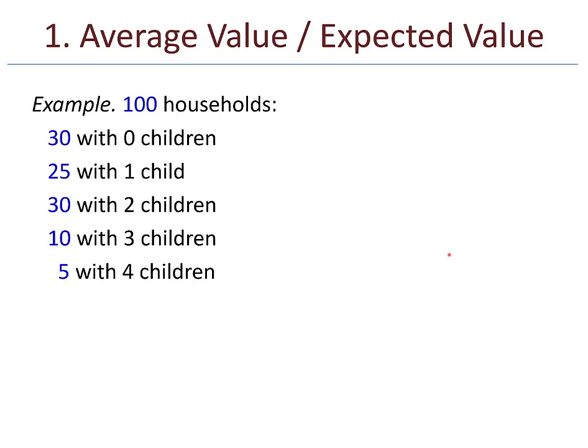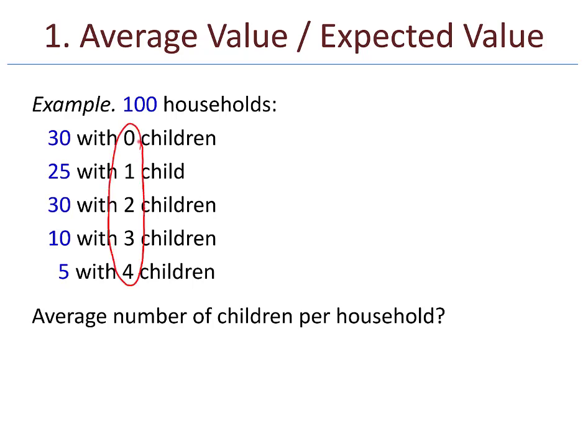Let's begin with an example. Suppose that there are 100 households: 30 with 0 children, 25 with 1 child, 30 with 2 children, 10 with 3 children, and 5 with 4 children. We could ask ourselves, what is the average number of children per household? We can't just take the average of the different child numbers, 0 through 4.